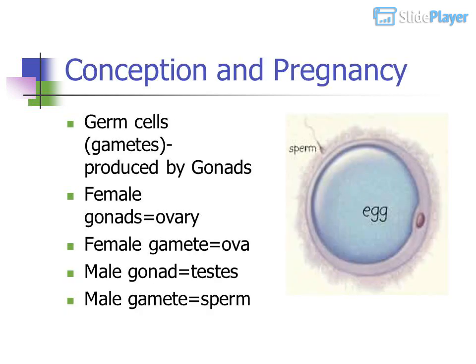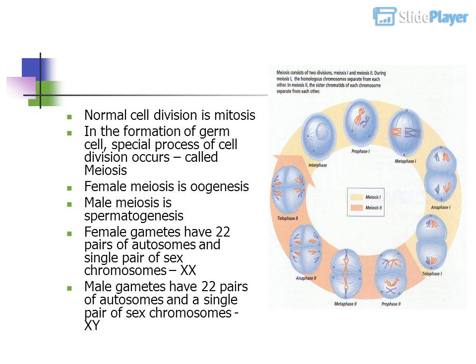Conception and pregnancy — germ cells, or gametes, are produced by gonads. Female gonads are ovaries; the female gamete is the ovum. Male gonads are testes; the male gamete is sperm. Normal cell division is mitosis. In the formation of germ cells, a special process of cell division occurs called meiosis.